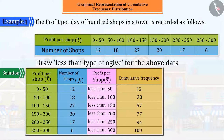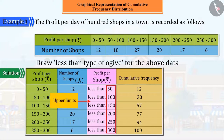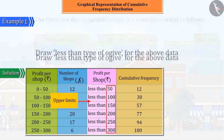Here you can see that 50, 100, 150, 200, 250, and 300 are the upper limits of the corresponding class intervals.